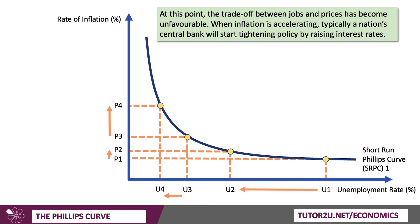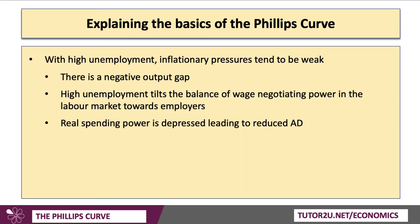At this point, the trade-off between jobs and prices has become unfavourable. When inflation is accelerating — 3%, 4%, 5%, and above — we often see a nation's central bank, such as the Federal Reserve or the Bank of England, starting to tighten policy by raising interest rates to cool the inflationary pressure. Explaining the basics: when unemployment is high, inflationary pressures tend to be weak. Often there's a big gap between potential and actual GDP — a negative output gap. High unemployment tilts the balance of wage-negotiating power towards employers, because there's a big excess supply of labour.